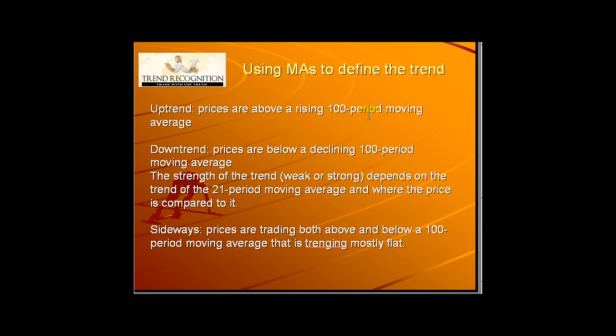If you have an uptrend, prices are staying above the 100-period moving average which itself is trending higher. If you have a downtrend, prices are usually below their 100-period moving average which itself is trending down. To define the strength of the trend — weak or strong — you look at the 21-period moving average and where the price is compared to it. For example, if the price is below the 100-day moving average but above the 21-period moving average, the general trend is down but it's a weak one. The sideways market is in place when prices are trading both above and below their 100-period moving average, which itself is trending sideways, mostly flat.